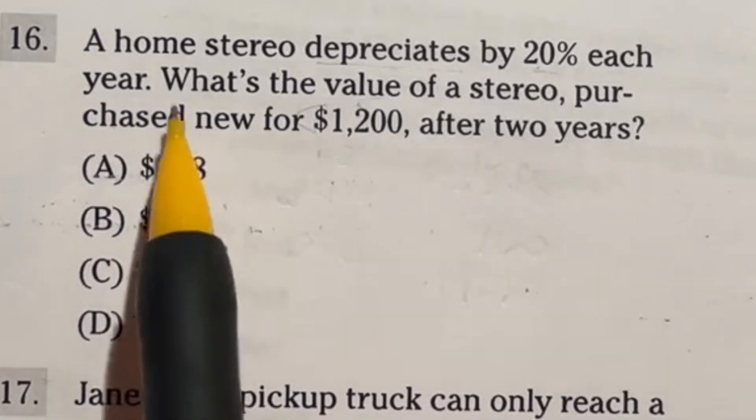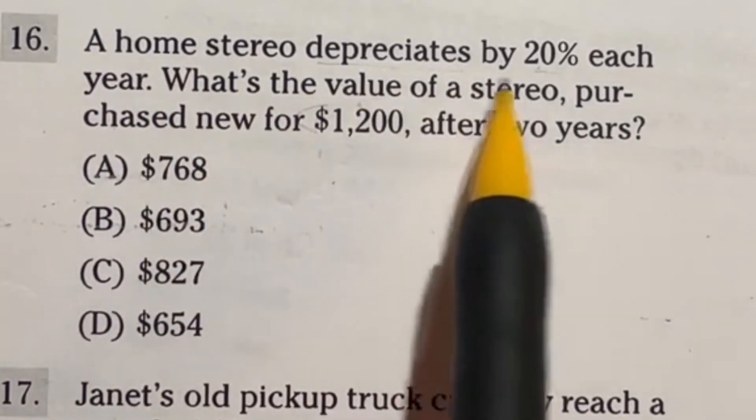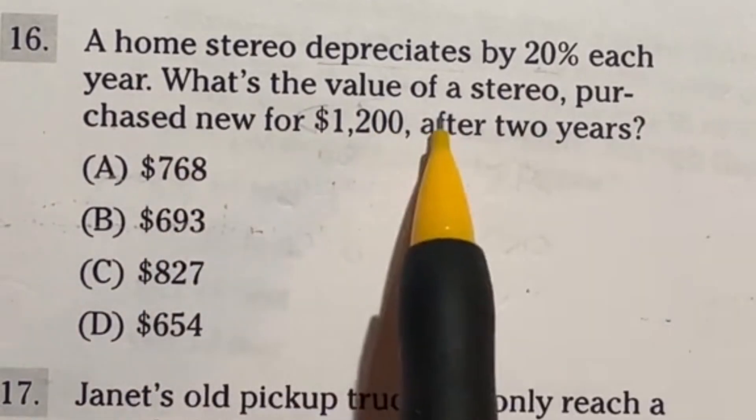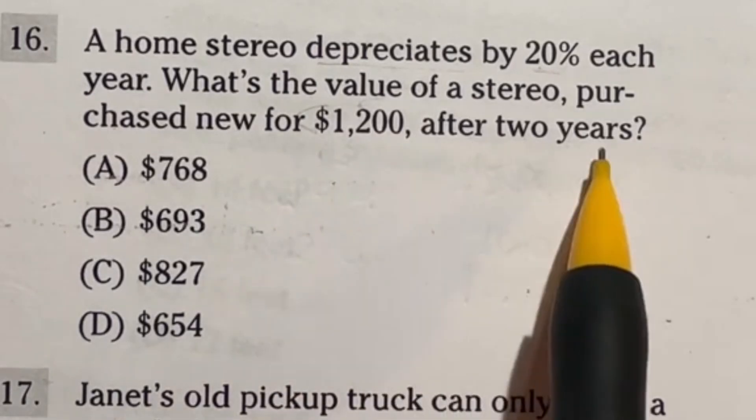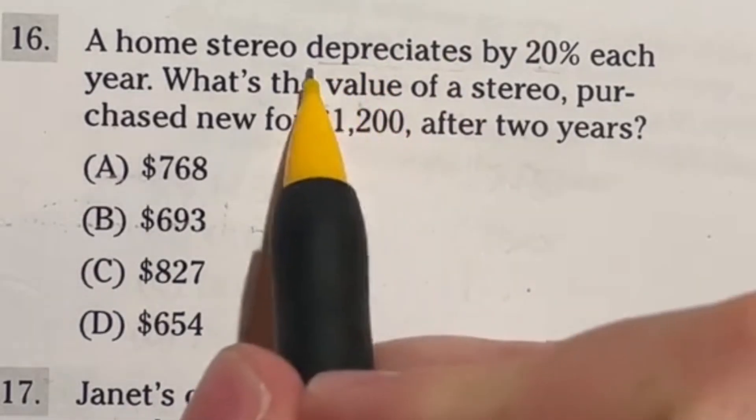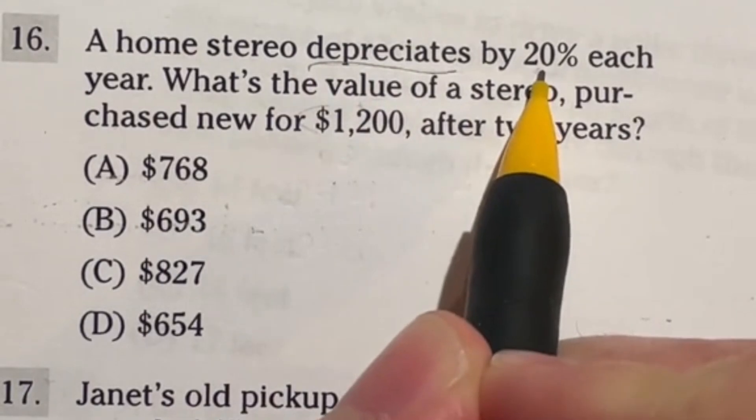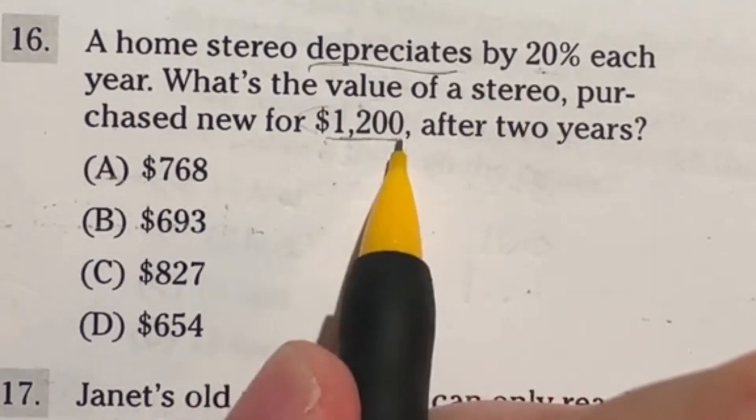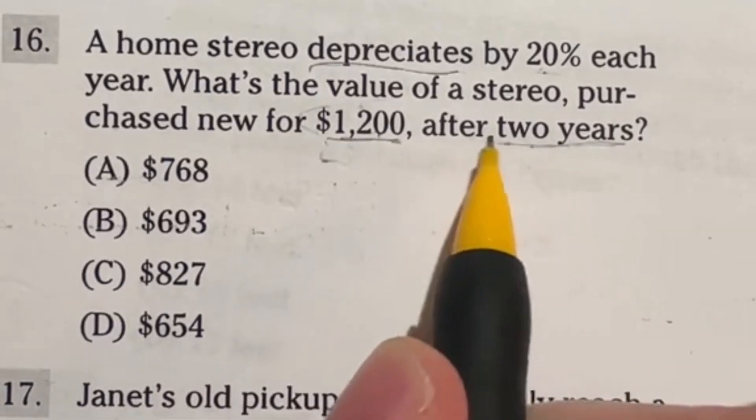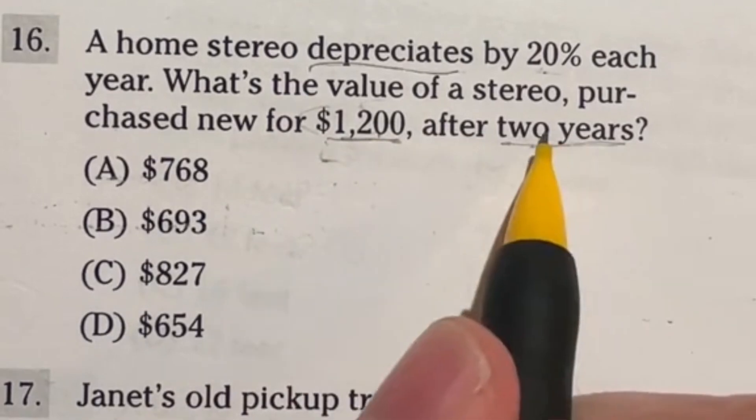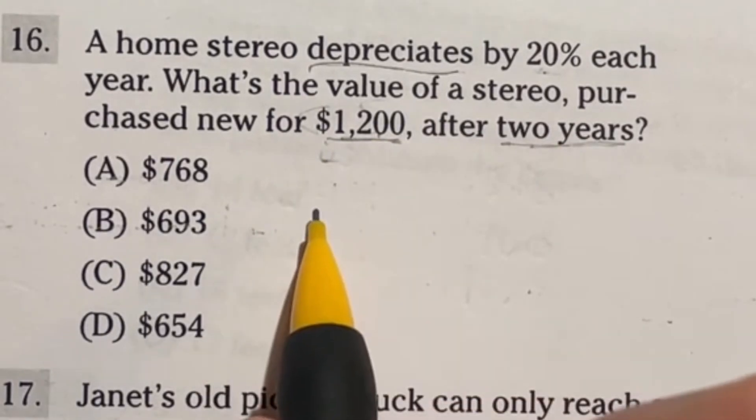Number 16 on the ASVAB says a home stereo depreciates by 20% each year. What's the value of a stereo purchased new for $1,200 after two years? So here's the deal. Depreciate means it goes down by 20%. So we need to find 20% of this guy, subtract it away, and because we're doing two years we're then going to have to find 20% of that answer and subtract it off as well.